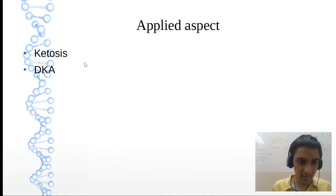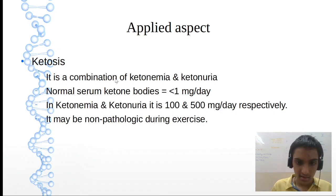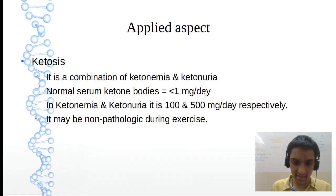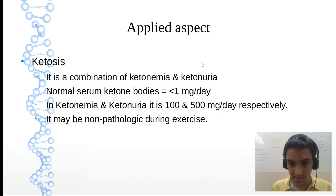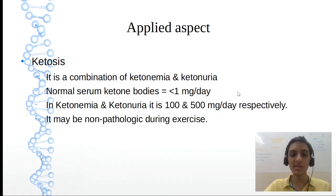Let's see the applied aspect — ketosis and diabetic ketoacidosis. Ketosis is a combination of ketonemia and ketonuria. Ketonemia means ketone bodies in the blood; ketonuria means ketone bodies in the urine. Normally, the serum value is less than 1 mg/dL. In ketonemia the level is 100 mg/dL, and in ketonuria it is 500 mg/dL — five times that of ketonemia. Easy way to remember: ketonemia is 100, and five times of that is ketonuria.